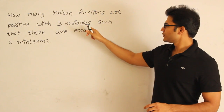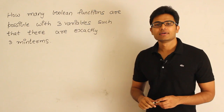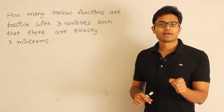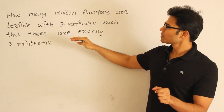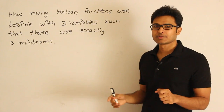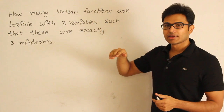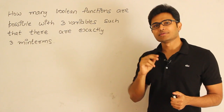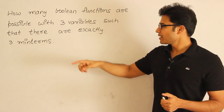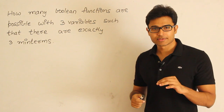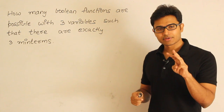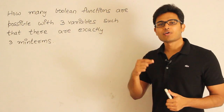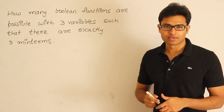How many Boolean functions are possible with three variables such that there are exactly three min terms? First of all, with three variables, how many input combinations are possible? Since every variable can take two possibilities, the number of rows is 8. They are saying that exactly three min terms should be there, which means out of these eight combinations, only three have to be assigned one and all other combinations have to be assigned zero.